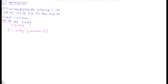To find extreme values, we find the first derivative, set it equal to zero, find critical numbers, then check the second derivative. But here S has both x and y, so we need to reduce to one variable. From the constraint x·y = 768, we solve for y = 768/x, and substitute: S = x + 3·(768/x).